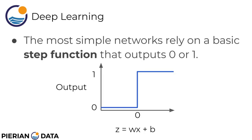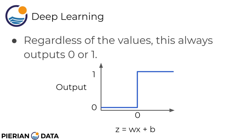I just mentioned if we're doing a binary classification problem it would be really nice that the neuron always spits out either a 0 or 1. The absolute simplest networks can rely on a basic step function that outputs 0 or 1. All we do is dependent on the value of z along the x-axis: if its value is less than 0 we output 0, if value of z is greater than 0 then we output 1.